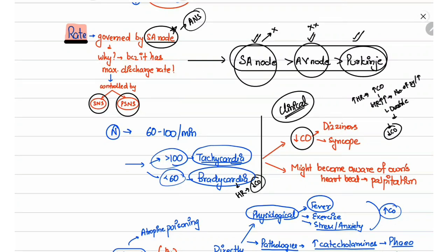Similarly, in bradycardia, as the heart rate decreases, the amount pumped per minute decreases and cardiac output falls. The patient can present with dizziness and syncope. Also, whenever there is a change in heart rate, the patient might become aware of their own heartbeat, which is known as palpitation. So due to a change in rate, the patient can present with palpitation, dizziness, or direct syncope.